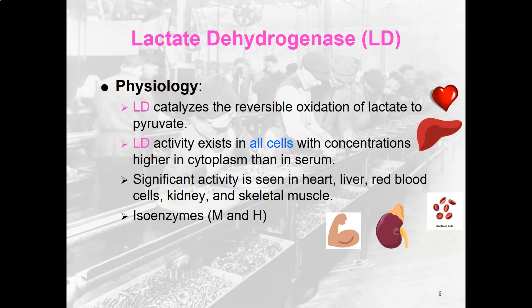Our next enzyme is lactate dehydrogenase, or LD, sometimes called LDH. It catalyzes the reversible oxidation of lactate to pyruvate. During glycolysis, glucose is broken down into two pyruvate molecules sent to the mitochondria for ATP production, but that process requires oxygen. When oxygen is absent, pyruvate is converted to lactate, which is lactic acid — the compound that accumulates in muscles during anaerobic exercise and causes soreness.